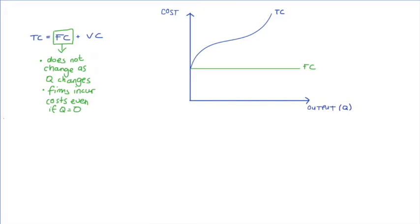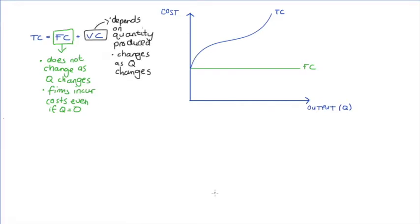Variable costs are those costs that depend on how much we produce — they change as we change quantity. When quantity is zero, variable cost will be zero too, so the variable cost curve comes straight out of the origin. We can figure out the rest of the shape from the total cost curve. Fixed costs explain the level that total costs start at, and variable costs are identical to the shape of the total cost curve from that point — it's exactly the same shape but shifted down by the amount of fixed costs.